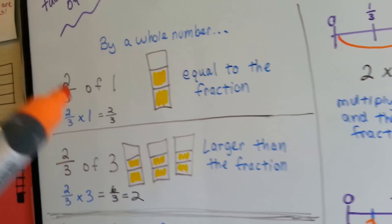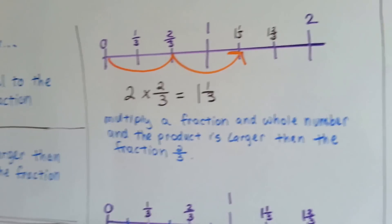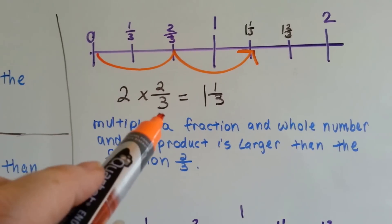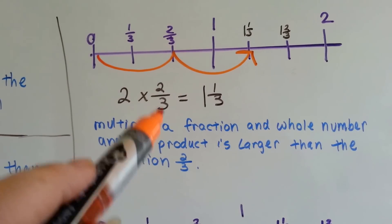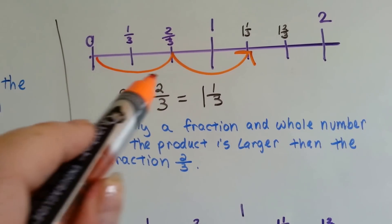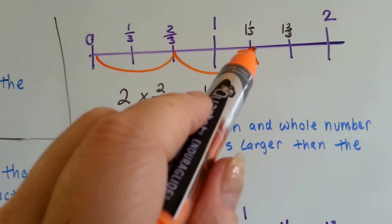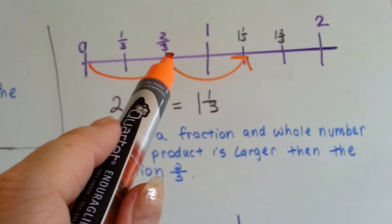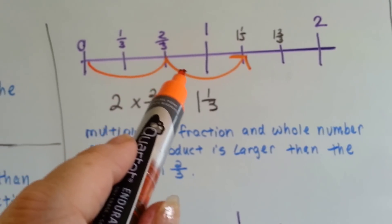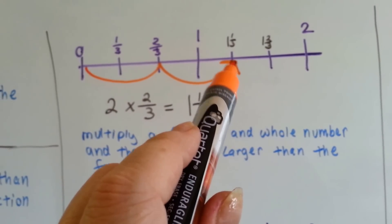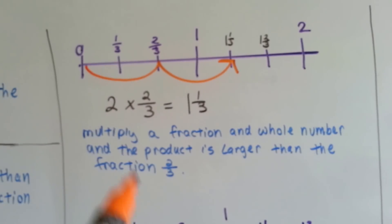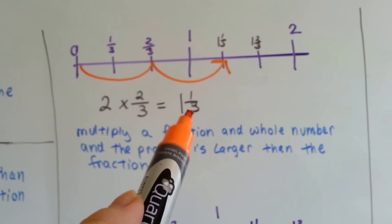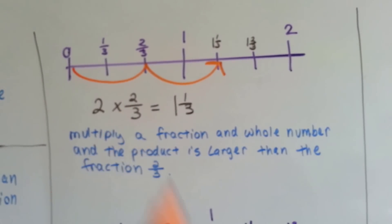We used models to show us; we can also use a number line to show us that. If we have 2 times two-thirds, that means we have two-thirds two times — one time, two times. These are split into thirds. Here's one two-thirds, and then we go — there's another two-thirds — we get one and one-third. Multiplying by a whole number gives us a product that's bigger than that fraction.